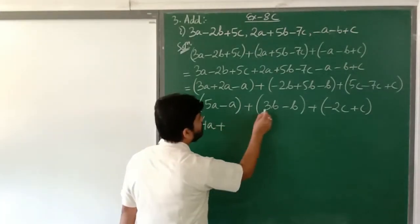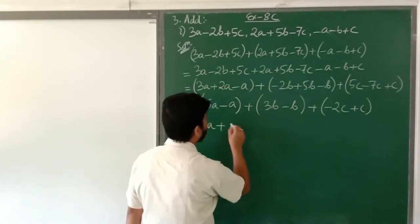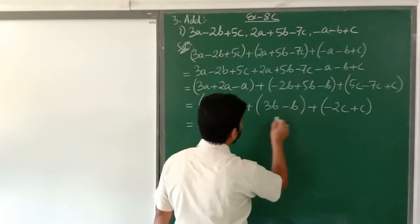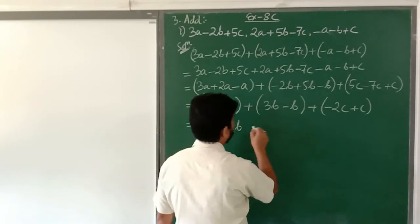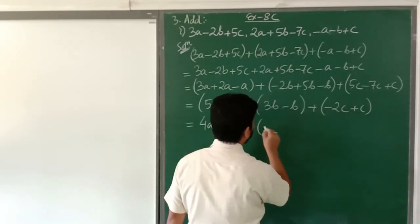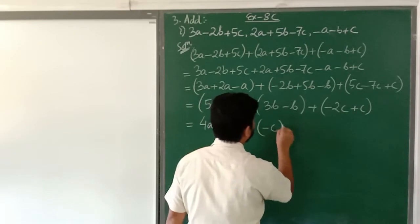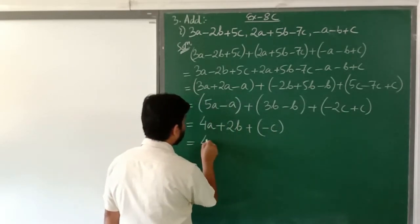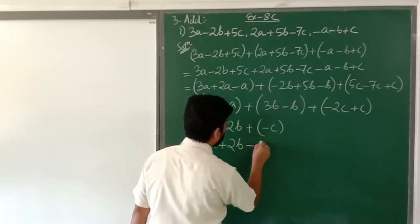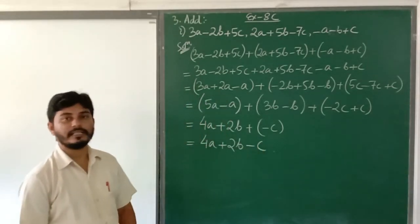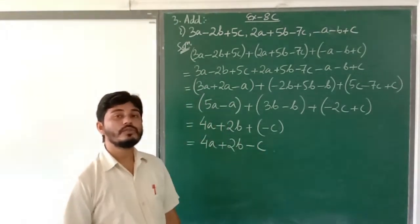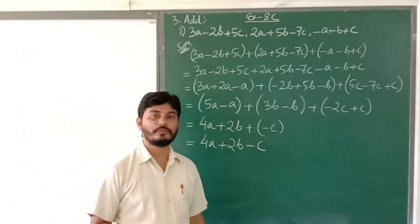Plus 3b minus b is 2b. Then minus 2c plus c is minus c. So the final answer is 4a plus 2b minus c. That is how we add two or more expressions.